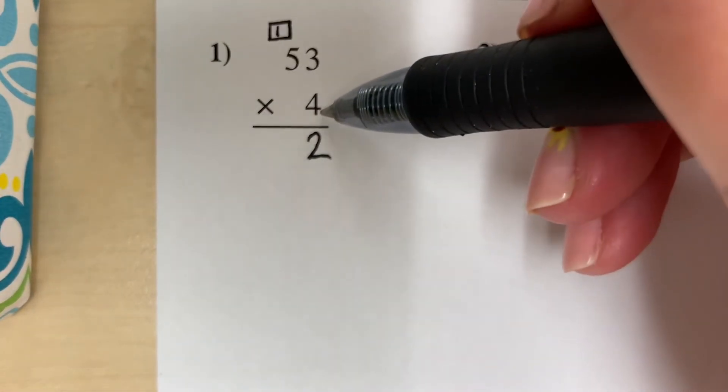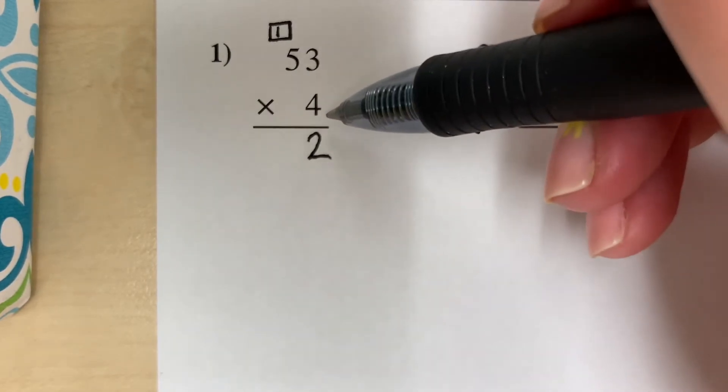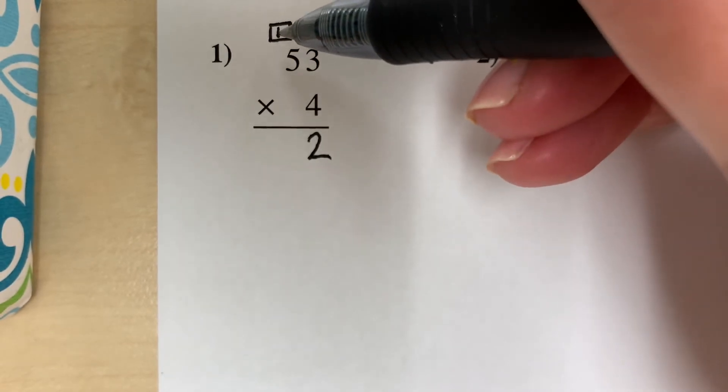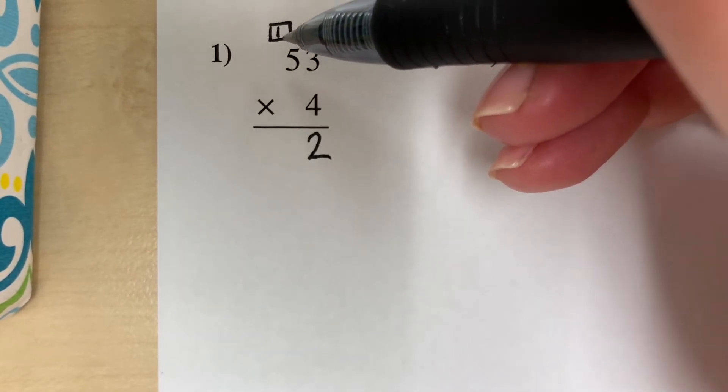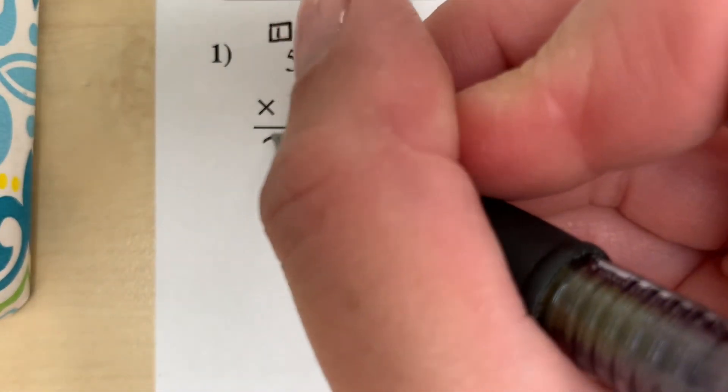Now we do 4, our multiplier, 4 times our tens place multiplicand, 4 times 5, which is 20, plus this one that we carried, so 21. And because we're not carrying next door, we're just going to put that right here, 21.